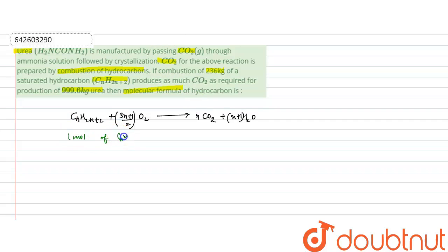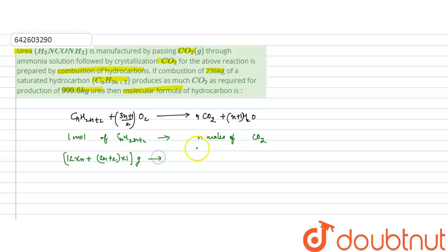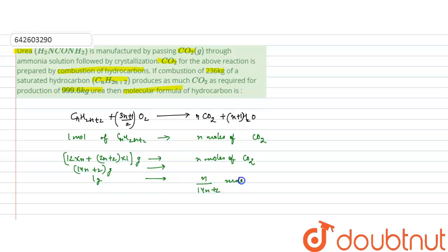1 mole of hydrocarbon CₙH₂ₙ₊₂ produces n moles of CO₂. The molecular weight of 1 mole of hydrocarbon equals 12n + (2n+2)×1 = 14n+2 grams. So 14n+2 grams of hydrocarbon produces n moles of CO₂. For 1 gram, it produces n/(14n+2) moles of CO₂. Therefore, 236 kg produces n/(14n+2) × 236×10³ moles of CO₂.